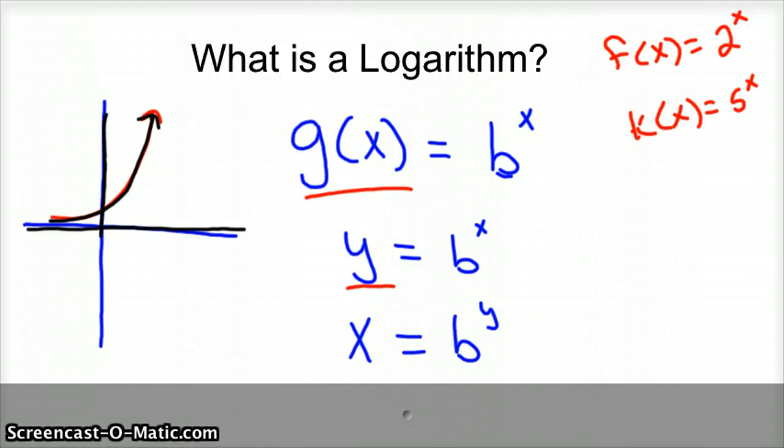And so then you would flip-flop your x and your y around. So you'd change these to invert it. So x equals b to the y. So if we solve that for y, we would end up with the inverse function. Then we could convert it back to a function.